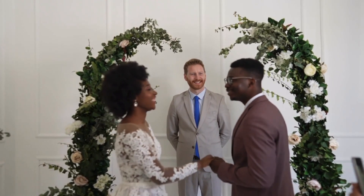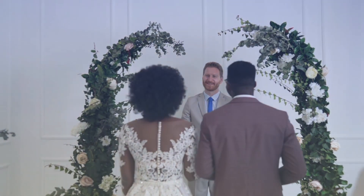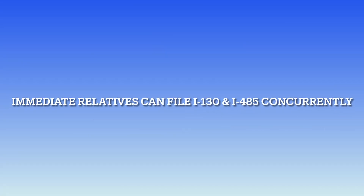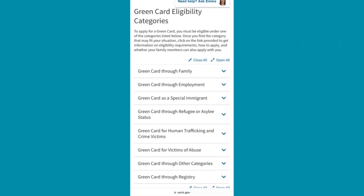However, if you're the spouse, parent, or a married child under the age of 21 of a U.S. citizen, then you can file both form I-130 and form I-485 at the same time. Form I-485 can also be used for other types of green card applications — those that fall under the seven main categories we discussed earlier.